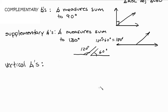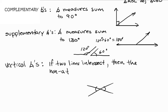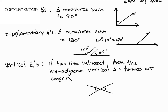Vertical angles appear when you have two lines that intersect. The vertical angles formed are non-adjacent and congruent. If two lines intersect, the non-adjacent vertical angles formed are congruent. It's enough to just say: if two lines intersect, then the vertical angles formed are congruent.